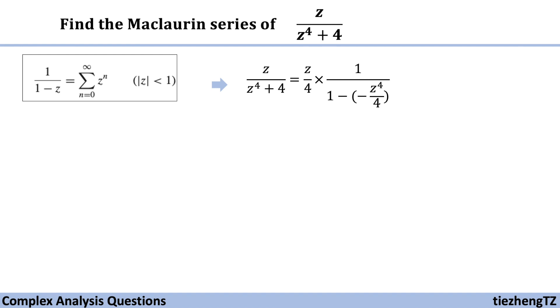1 minus negative z to the power of 4 over 4. So now in the denominator part we have the format 1 minus.